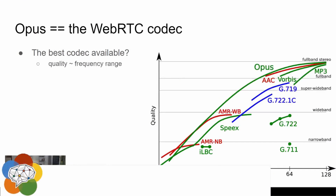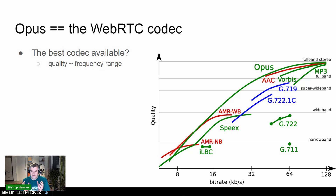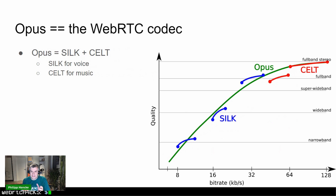In WebRTC, audio has for the last decade meant the Opus codec. We also have G.711, the PSTN codec, but we don't use that much. There's a famous image from the Opus homepage comparing Opus against other codecs competing for best audio codec ten years ago, showing bitrate on the x-axis versus quality on the y-axis. The goal is to be in the upper left corner — full band audio at a low bitrate — and Opus gets closest, ranging from 8 kbps to 128 or even 512 kbps.